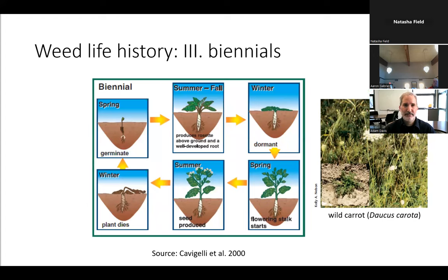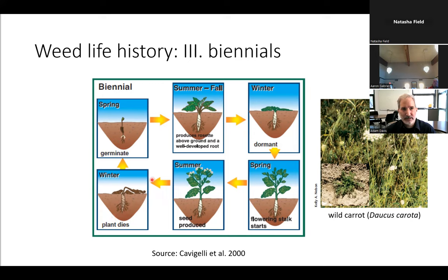Biennials complete their life cycle in two years. Wild carrot, Daucus carota, is a biennial. You get germination often in the spring, it grows to produce a rosette that remains dormant the following winter. The next spring that rosette bolts and produces seed, the plant dies, the seeds are in the seed bank, and then the cycle begins again — a two-year life cycle.